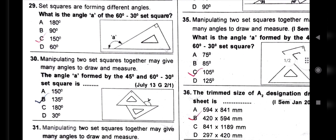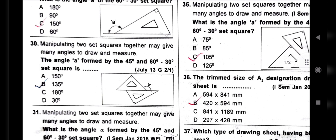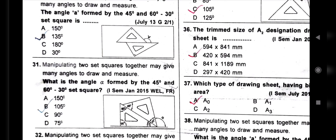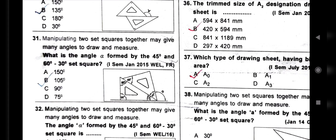Next question: the angle A formed by the 45 degree and the 60-30 degree set square. The other angle A of the 80 — how much is the angle A of the 60 and 30 degree? Next question: what is the angle A of the 60 and 30 degree set square?